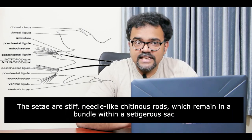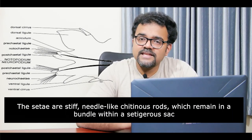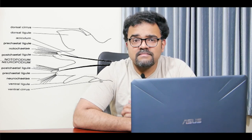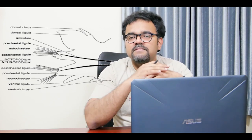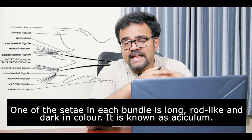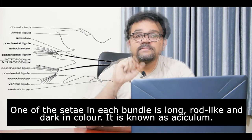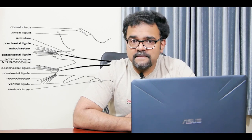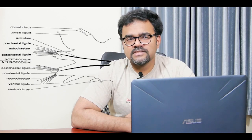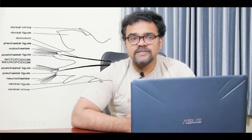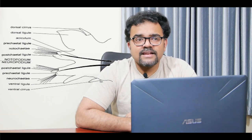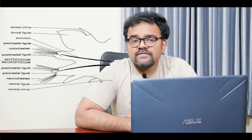Both parts are bilobed and bear a bundle of chaetae which project beyond these lobes. The chaetae are stiff, needle-like, chitinous rods which remain in a bundle within a chaetigenous sac. The entire bundle may be moved in various directions with the help of muscles. One of the chaetae in each bundle is long, rod-like, and dark in color, known as the aciculum. The dorsal lobe of the notopodium and the ventral lobe of the neuropodium bear small tentacle-like cylindrical appendages called dorsal and ventral cirri respectively. Since parapodia are highly vascularized, they may serve respiratory functions as well.